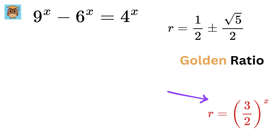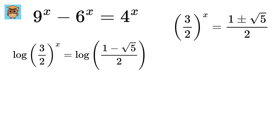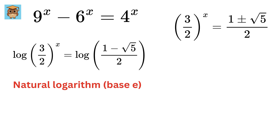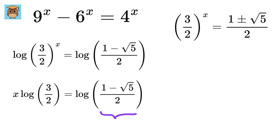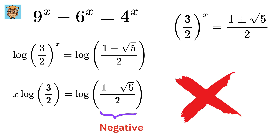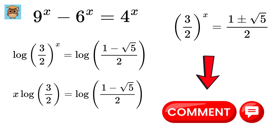Now we can again write 3 by 2 to the x as this and this. First, let us solve for the negative one. Take log on both sides, and note that we will be calling log as natural log, that is with base e — some people also refer to it as ln. Now use this property of logarithms to get x times log of 3 by 2 equals log of this value. Note that this value is negative, and therefore it cannot directly represent a valid logarithmic argument, as logarithms of negative numbers are undefined in the real number system. So we will discard this equation. By the way, if you are somewhat familiar with complex numbers, can you figure out the complex value of x using this equation? Let me know your answer in the comments.